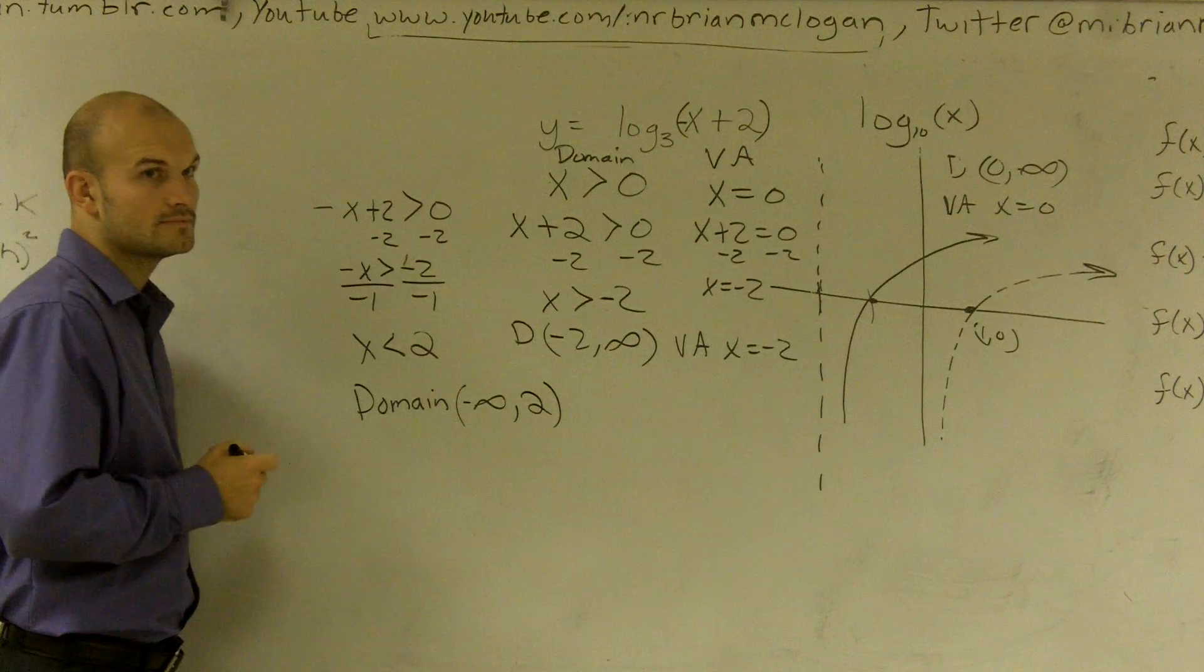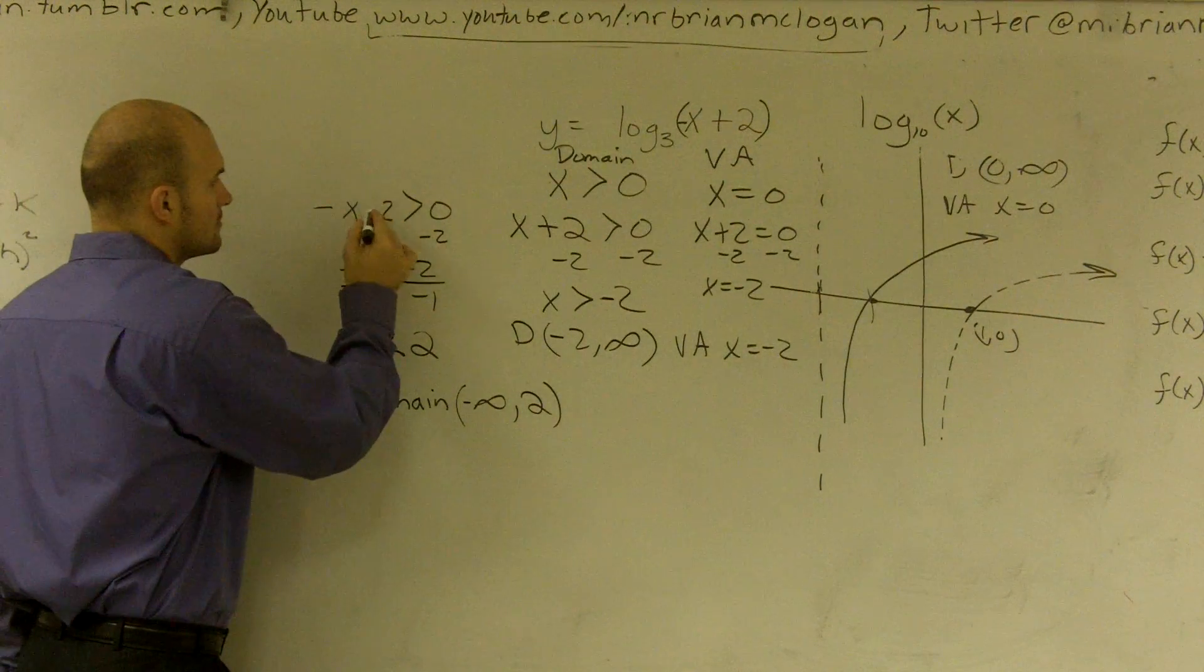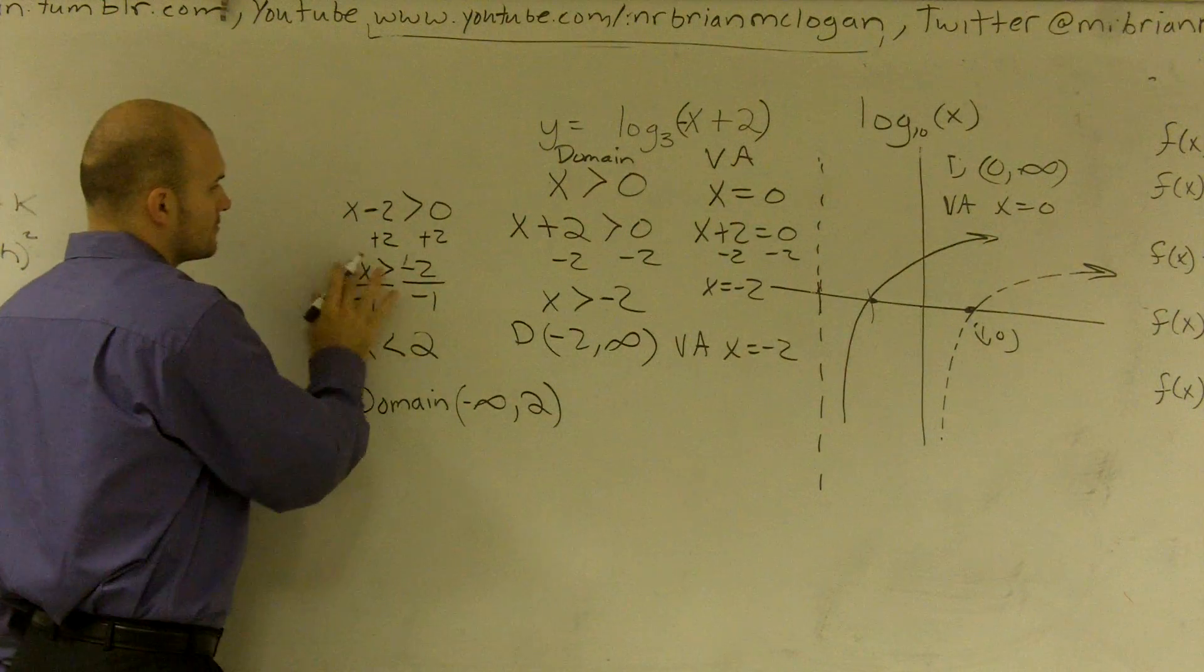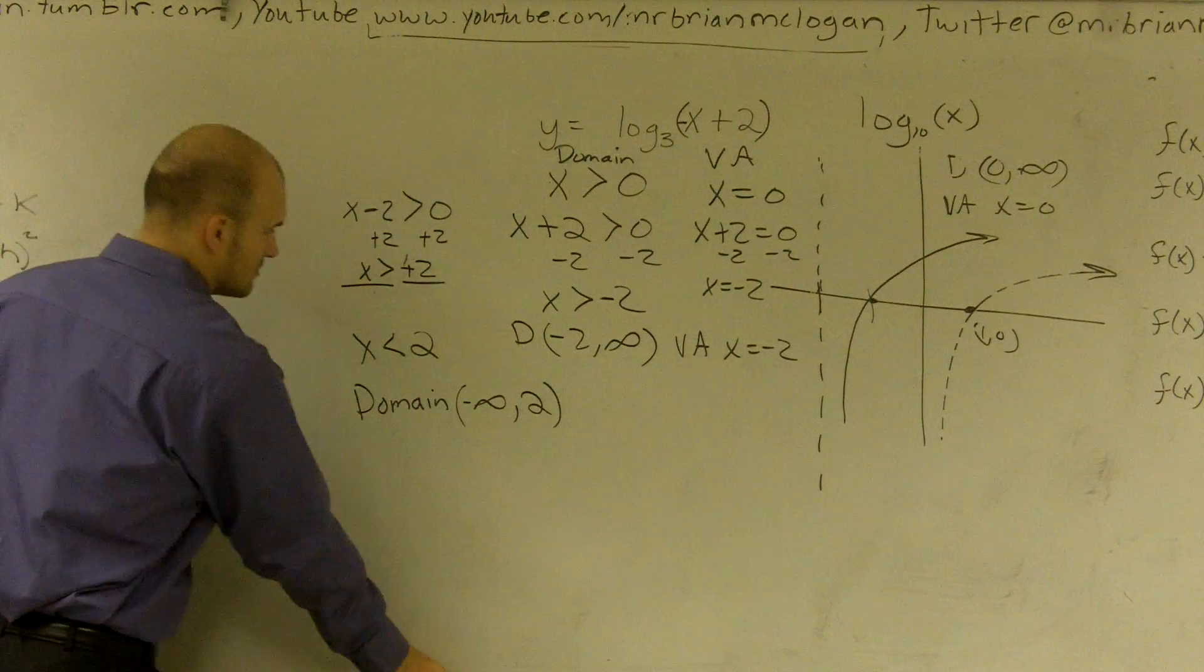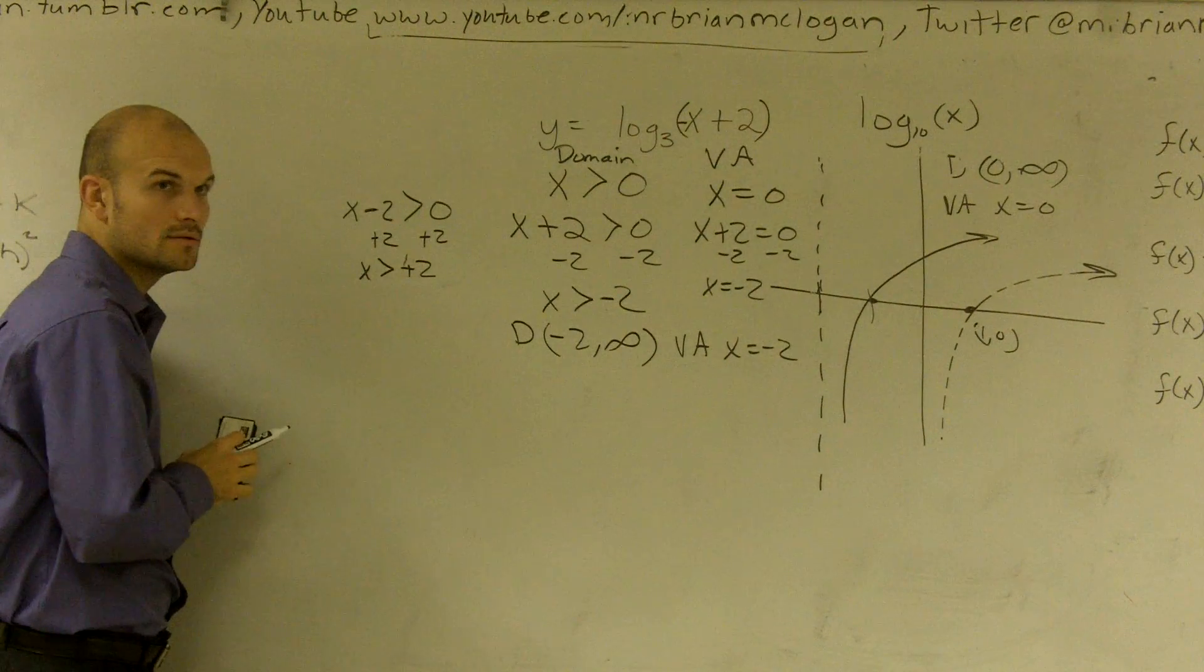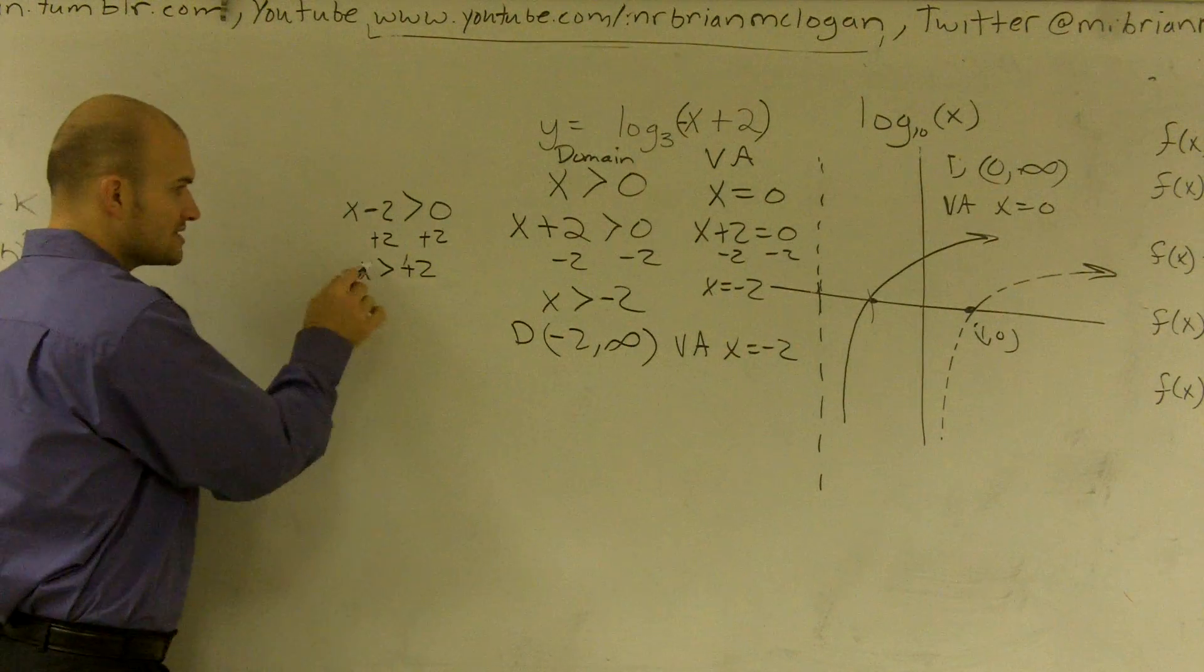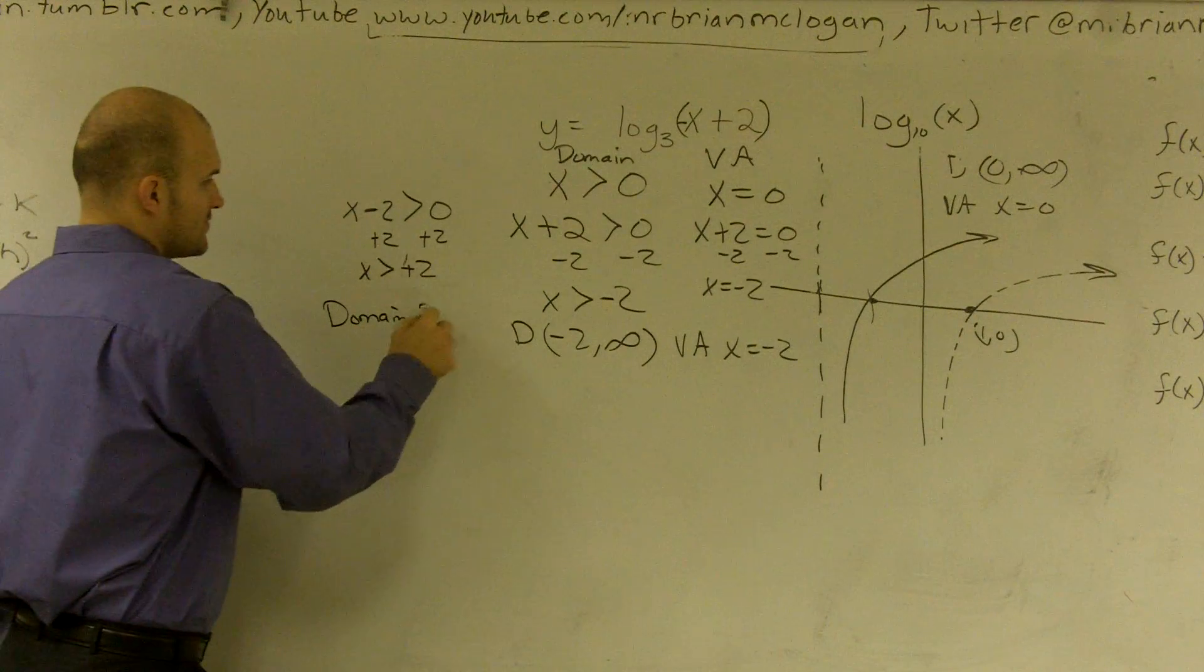But what if it was x minus 2, like I said prior, without the negative x? So it would be x is greater than 2. The sign wouldn't be flipped. You would only flip the sign when you multiply or divide by negative. So then how would you write that? It says all values greater than 2. So your domain is from 2 to infinity.